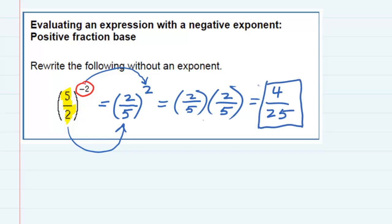So evaluating this expression has given us 4 25ths. We got rid of the negative exponent first by flipping and then once we have positive exponents we can just evaluate that.